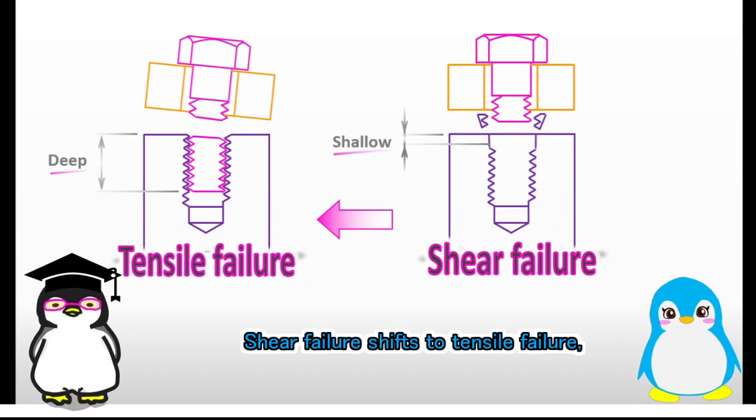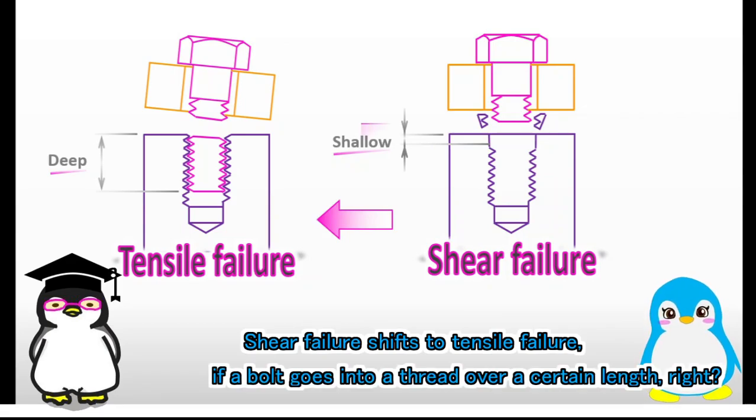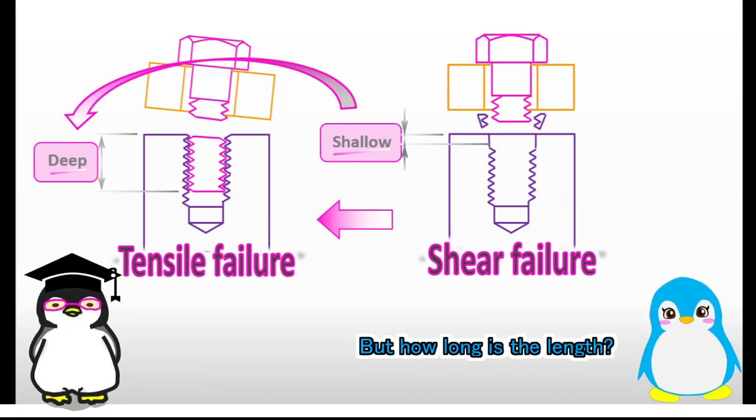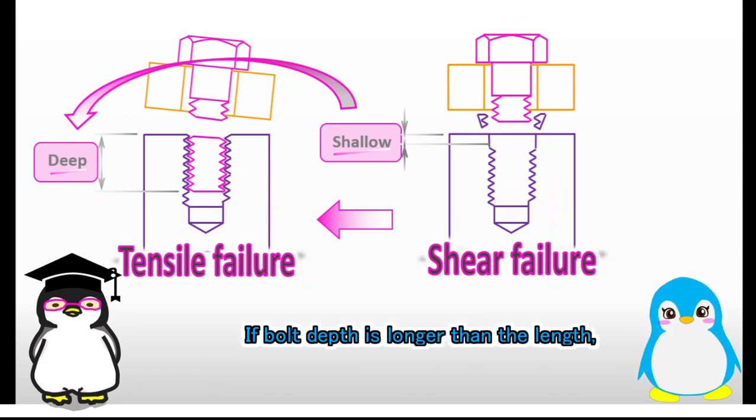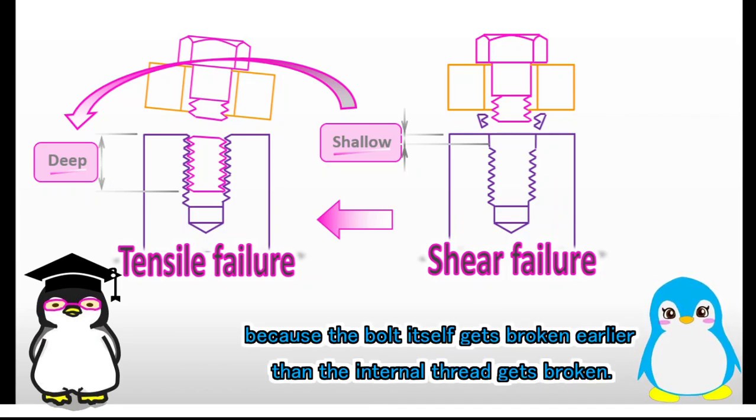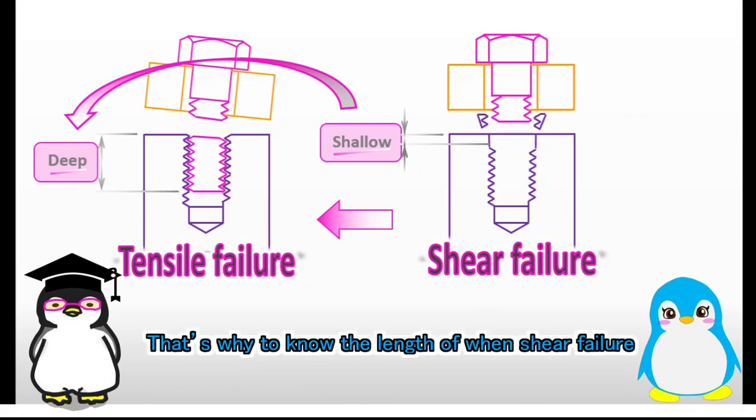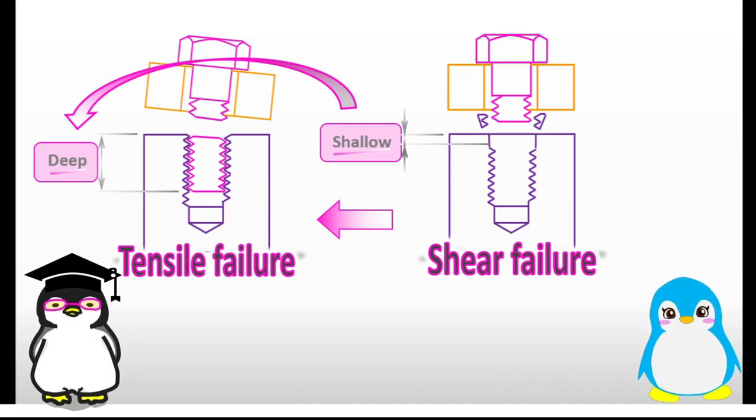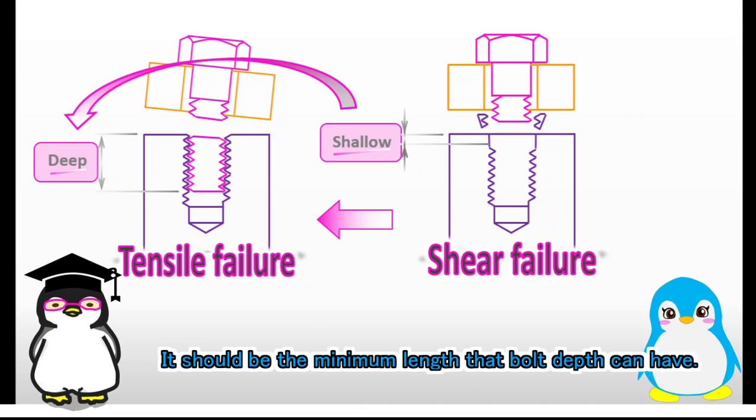I understood that bolt depth affects how a structure gets broken. Shear failure shifts to tensile failure if a bolt goes into a thread over a certain length, right? But how long is the length? If bolt depth is longer than the length, the internal thread will not get broken, because the bolt itself gets broken earlier than the internal thread gets broken. That's why to know the length when shear failure shifts to tensile failure is important. It should be the minimum length that bolt depth can have.